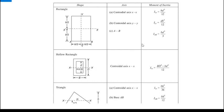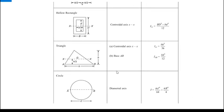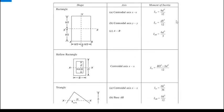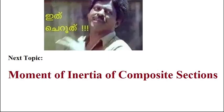Please consolidate all the final equations in your notebook — for all sections like triangle, circle, semicircle, etc. Draw a table with columns for shape, reference axis, and moment of inertia. Include Ix and Iy separately, and also Iy with respect to the base. This will help when solving composite section problems — you can refer to the table quickly. The next topic is moment of inertia of composite sections. Thank you.